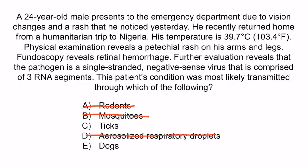Finally, E is a reference to many bacteria such as Campylobacter jejuni and Yersinia enterocolitica, but these do not cause hemorrhagic fever, so E is incorrect. So again, the correct answer is C, ticks. And with that, we've covered everything you need to know about Rift Valley Fever virus and Crimean-Congo Hemorrhagic Fever.